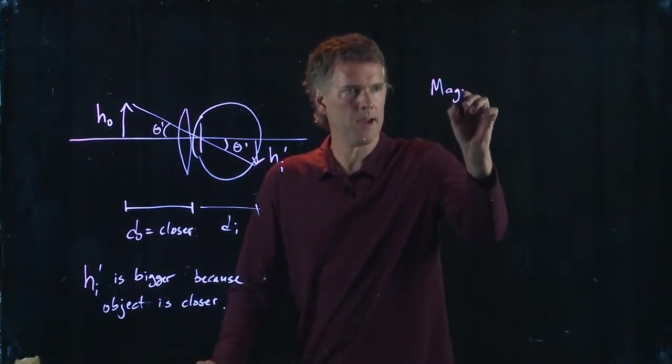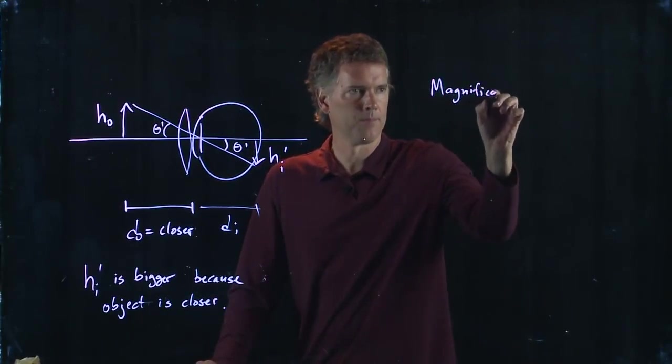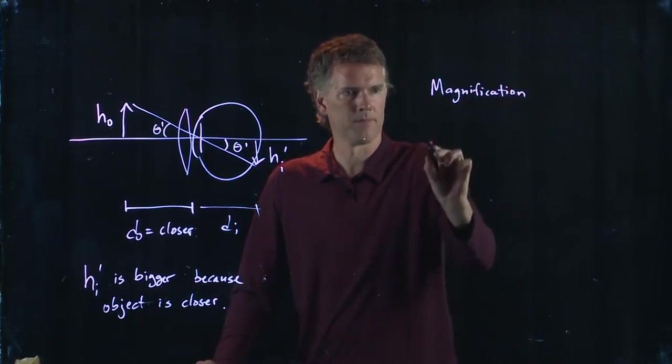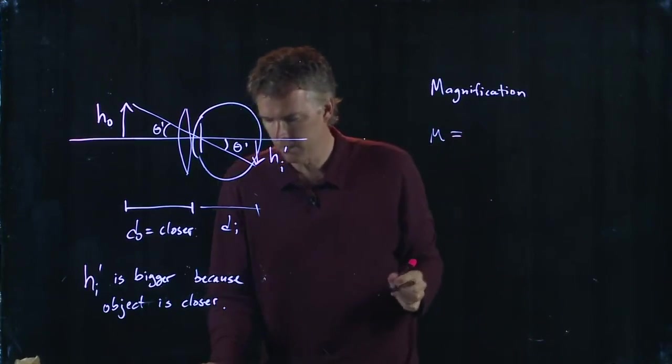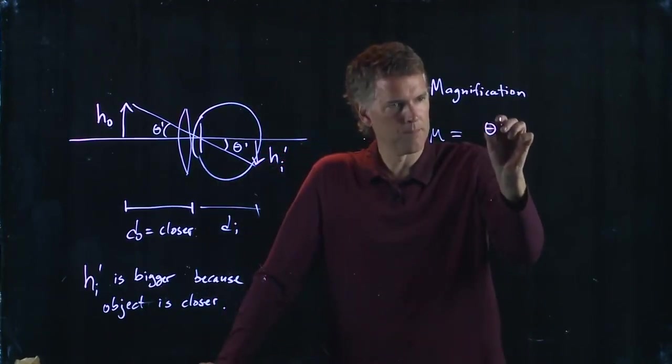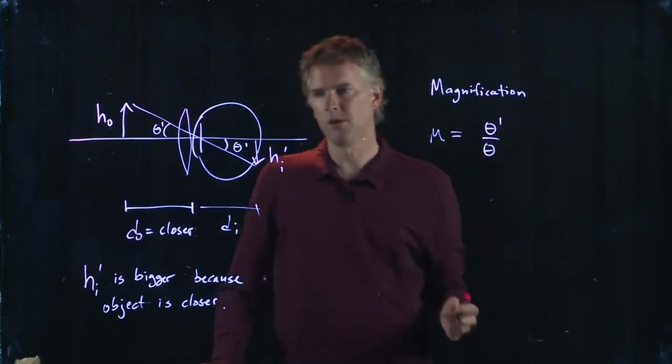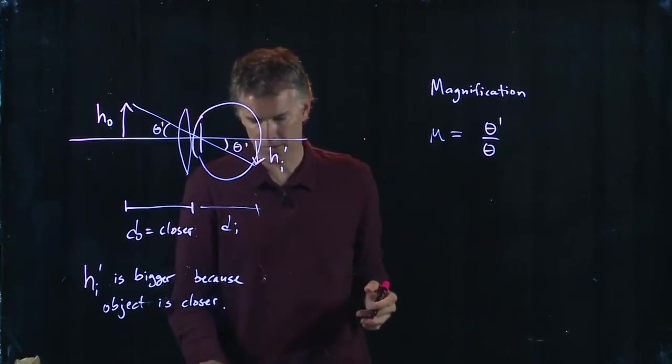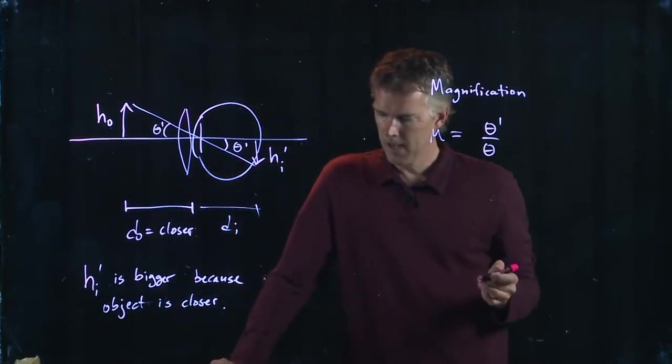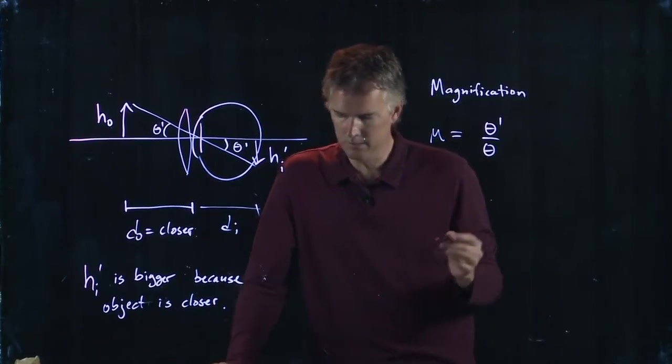The magnification M is theta prime over theta. What is our new angle compared to our old angle? And this, you can show, is the following.